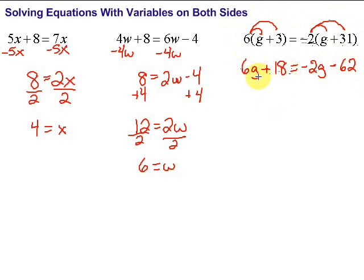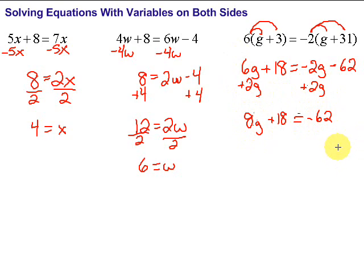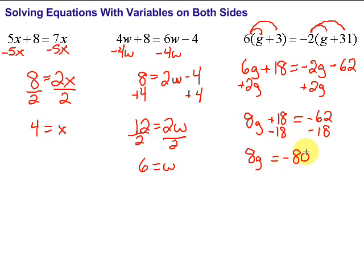Now we want to get all the g's together. We've got g's on both sides. Let's get rid of the negative 2g by adding 2g to both sides. 6g plus 2g is 8g, so we have 8g plus 18 equals negative 62. Next, get rid of the plus 18 by subtracting 18 from both sides. 8g equals negative 62 minus 18 — we're 62 in the hole and going 18 more, giving us negative 80. Last step: divide by 8 on both sides. g equals negative 80 divided by 8, which is negative 10.